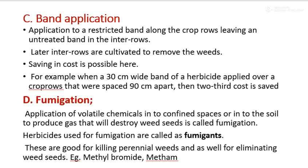Third is band application — application to a restricted band along the crop rows, leaving an untreated band in the inter-rows. Later, inter-rows are cultivated to remove the weeds. Saving in cost is possible here. For example, when a 30 cm wide band of herbicide is applied over crop rows spaced 90 cm apart, then 2/3 of the cost is saved.